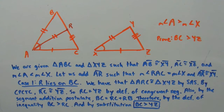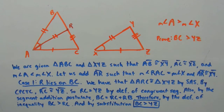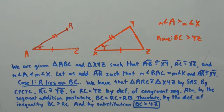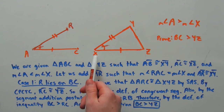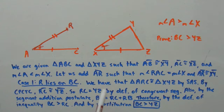And that is what we needed to prove, but that's only for case one. Let's look at case two, where R does not lie on BC. Notice that AR is still the same length, so AR is congruent to XY, and angle RAC is still congruent to angle X, but AB and BC are in a different position.